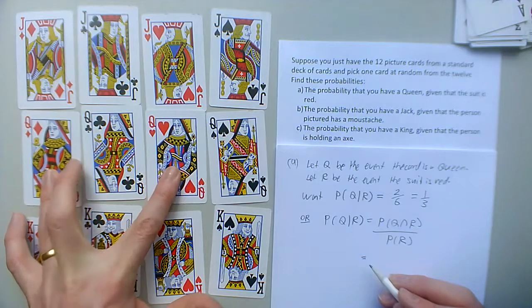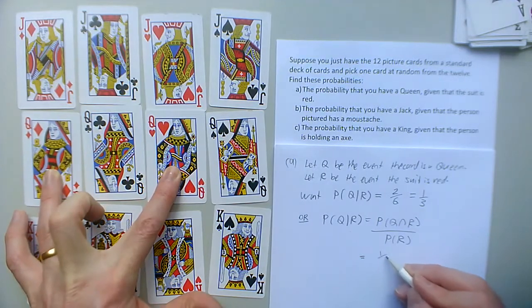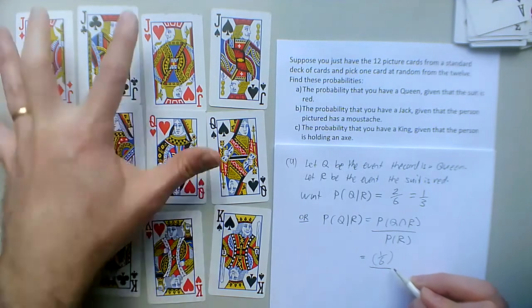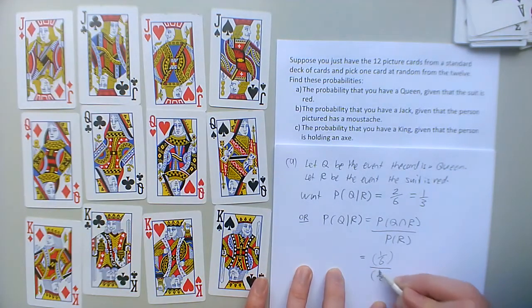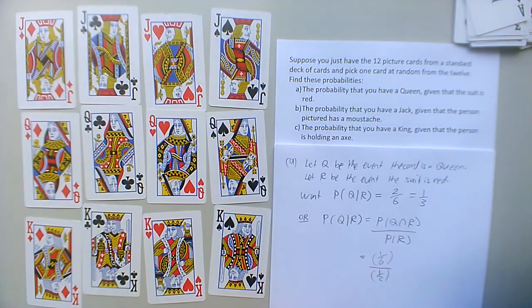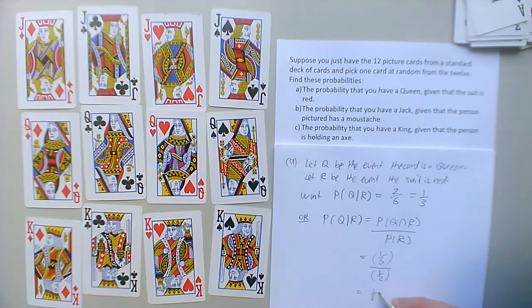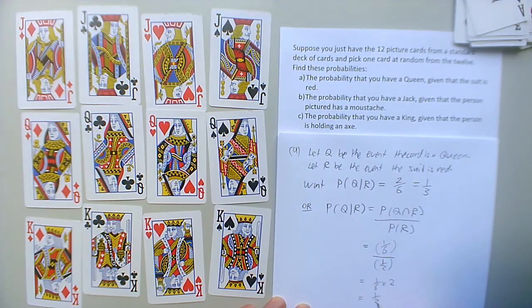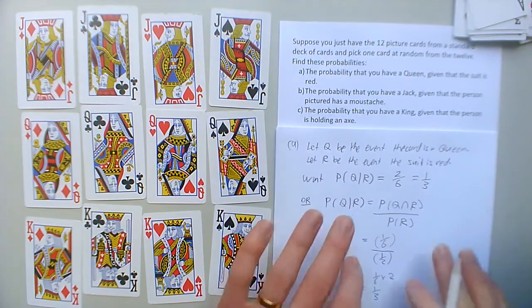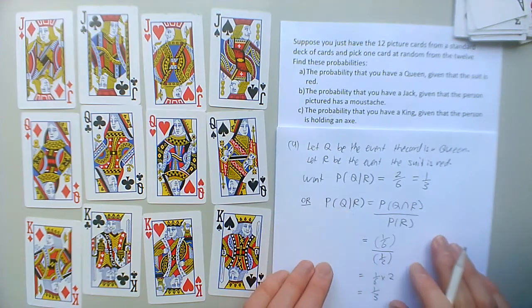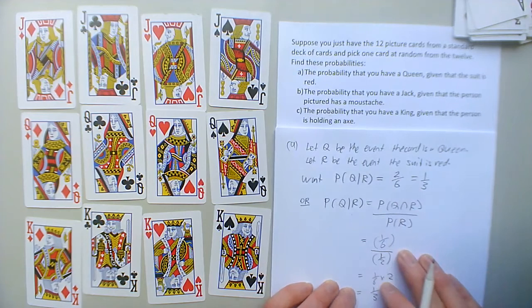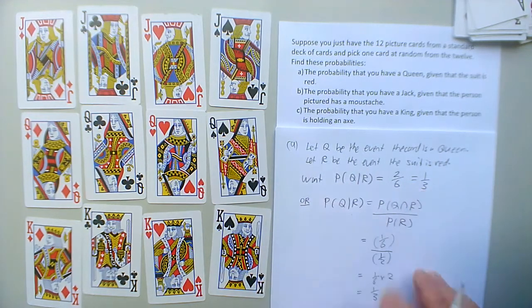And then red, half of them are red, so the probability of red is a half. And so a sixth divided by half would be the same as a sixth times two, which would be a third. Okay, so the formula is working the way I expect it to, and I reckon that since it does match the formal official formula, I'm just going to run with this counting version for all the rest of it.